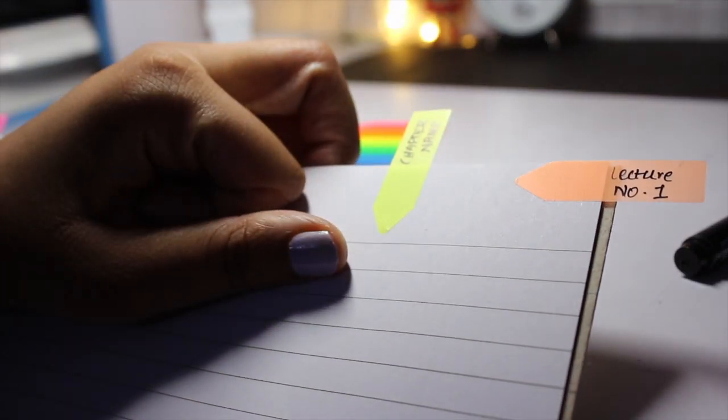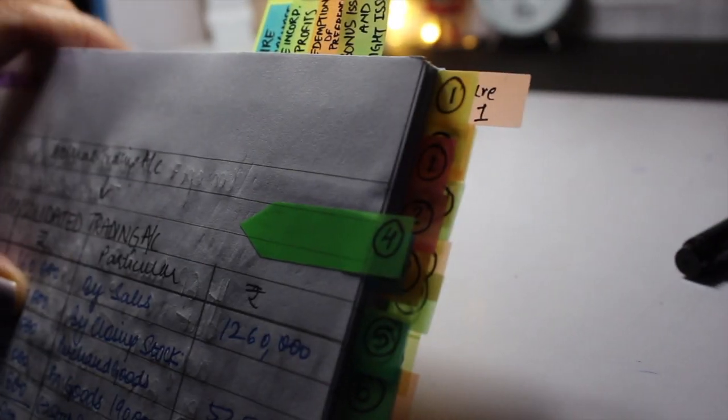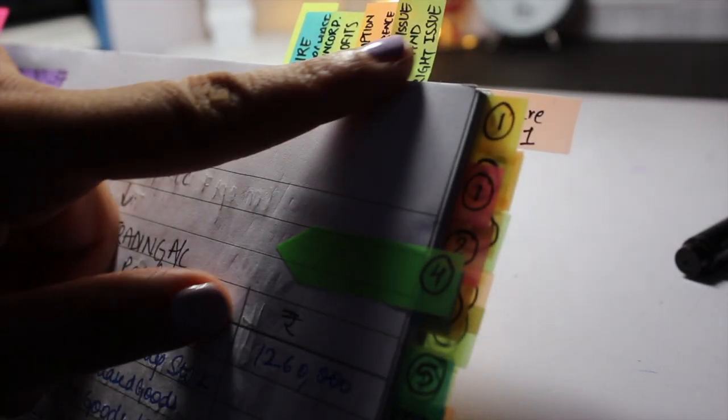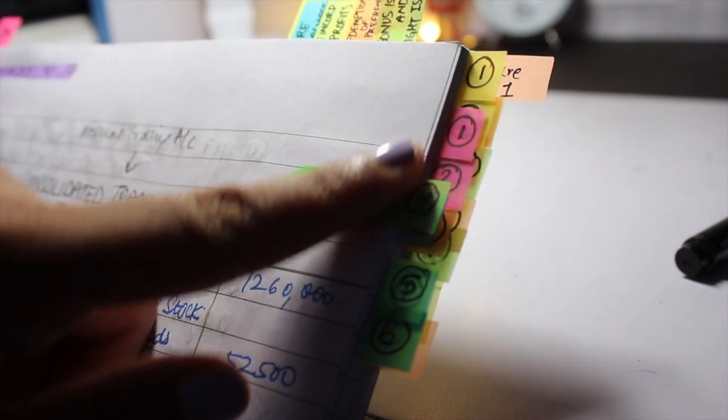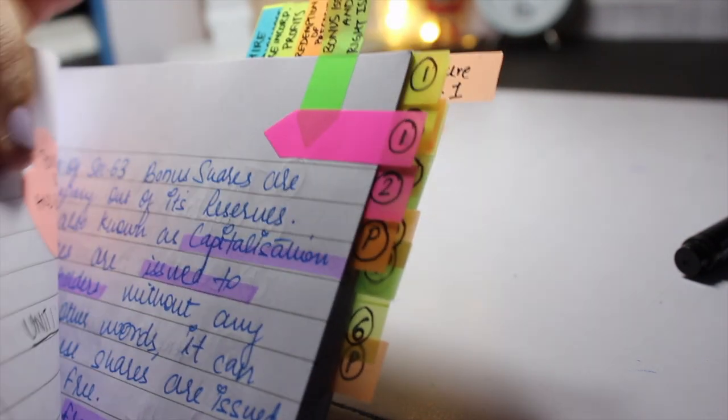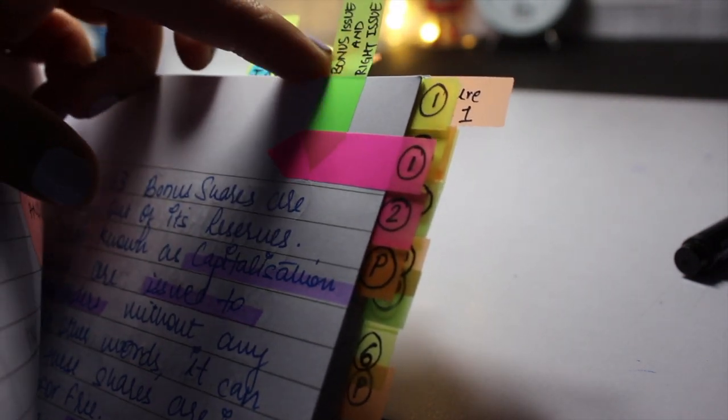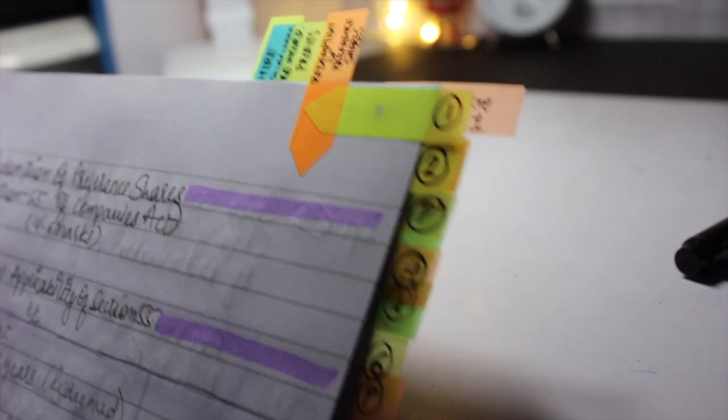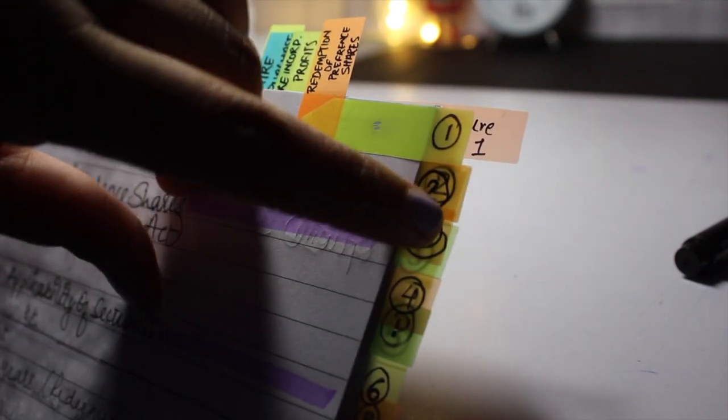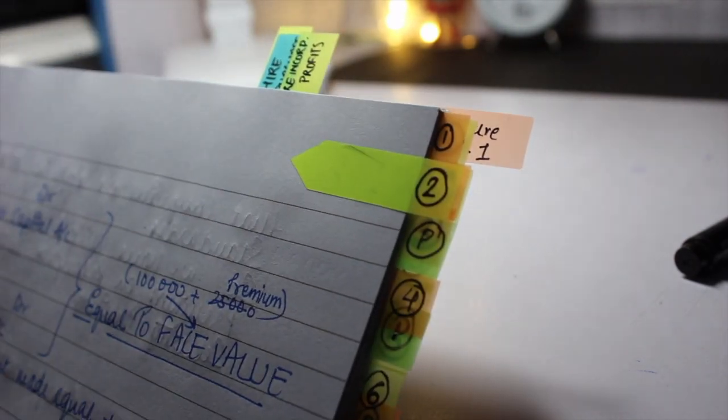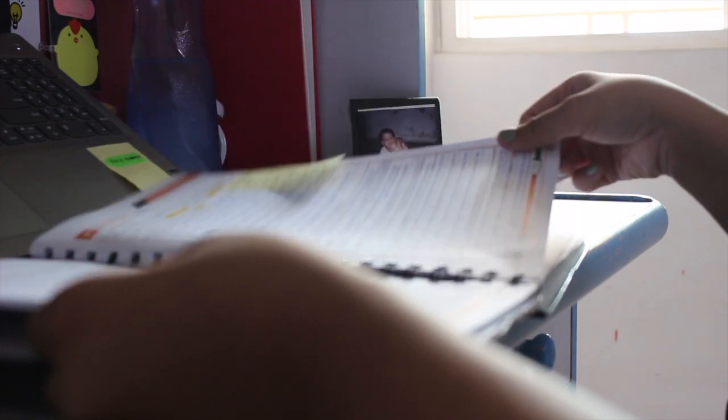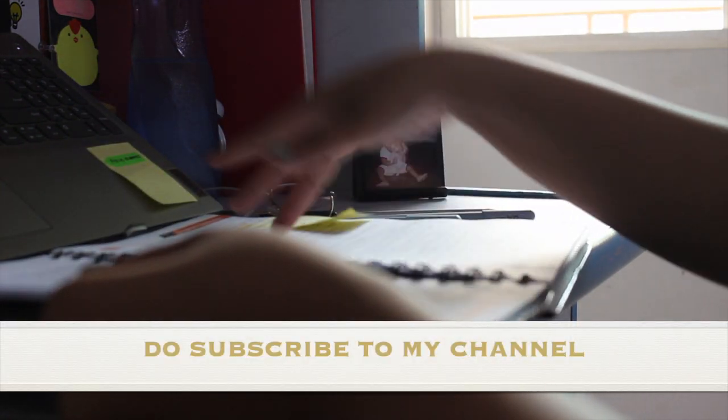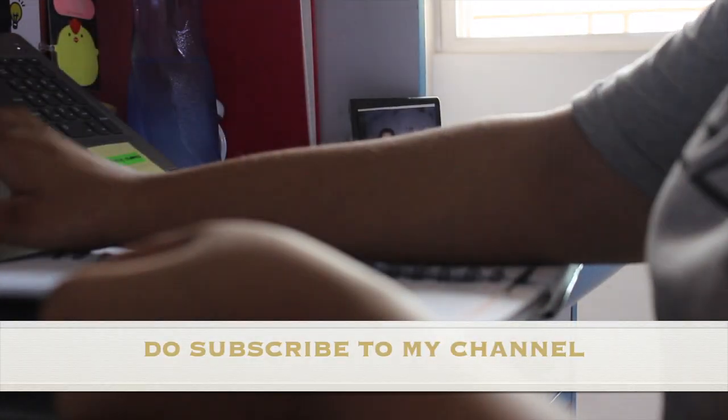Whenever you start with a chapter, write the name of the chapter and stick it on the horizontal. Write the lecture number whenever you start a lecture and stick it on the vertical column. I know you must be thinking you might as well make an index, but trust me numbering your entire notebook is not an easy task.